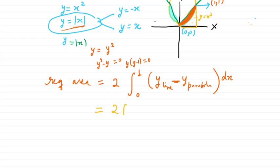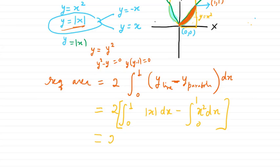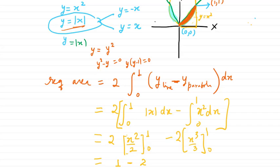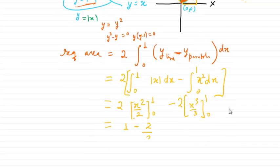We need to solve: twice of the integral from 0 to 1 of (mod x minus x squared) dx. This gives twice of [x squared over 2] from 0 to 1 minus [x cubed over 3] from 0 to 1. Putting in the values, the first part gives one half and the second part gives one third, so we get twice of (one half minus one third) equals one third square units. That is the area of the shaded region.